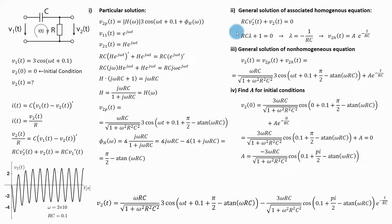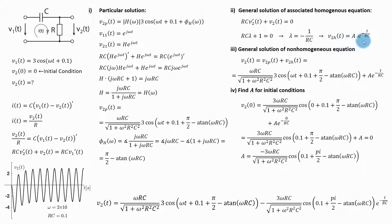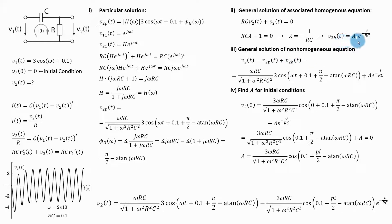Step two: I find the general solution of the associated homogeneous equation by substituting zero for the input, giving the homogeneous equation. Its characteristic equation has a root, and that gives the general solution of the homogeneous equation. Step three: the general solution of the non-homogeneous equation is the particular solution plus the general solution of the homogeneous equation. When I substitute, I get this general solution.